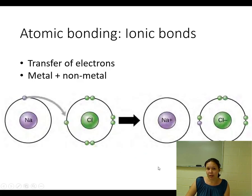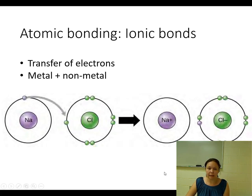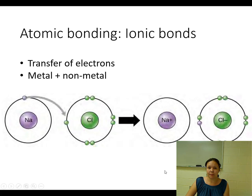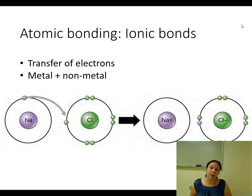Atoms can bond with each other, and that's the basis for understanding how all of life's macromolecules are built — things like carbohydrates, lipids, and proteins that our bodies require to fully function. There are really a couple of different ways atoms can bond: one is called ionic bonding, and another is called covalent bonding. Covalent bonding is more so how those macromolecules stay together in our body.